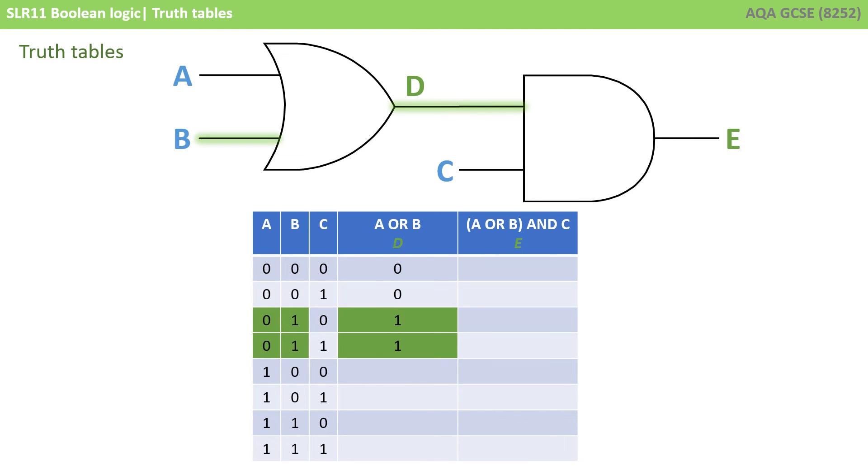In these two rows B is 1, so that's fine, the output's 1. In these two rows A is 1, so the output's 1. And in these two rows A and B are both 1, that's fine for an OR gate, so the output's 1. We're now done with the OR gate, so we can proceed to the AND gate.